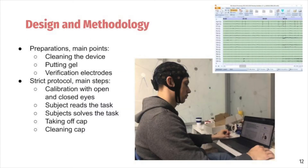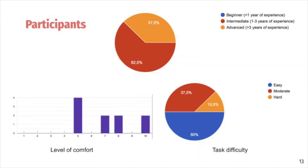As a preparation, the main points were cleaning the device, putting gel, and verifying electrodes. We then followed a strict protocol whose main steps were calibration with open and closed eyes, subject reads tasks, subject solves the task, taking off the cap, and cleaning the cap. Participants were nine students of Innopolis University, all 21 years old except for one who is 22, and all bachelor level fourth-year students. We asked their programming level and preferred task difficulty; 62% of participants solved the task. We also asked how comfortable it was to work while recording the EEG and what could be improved in the future.